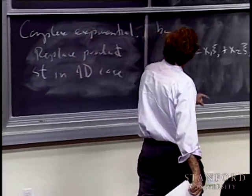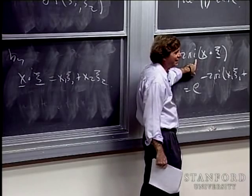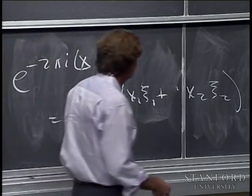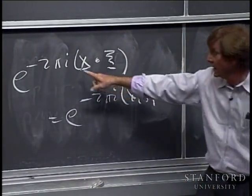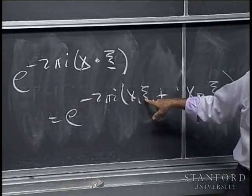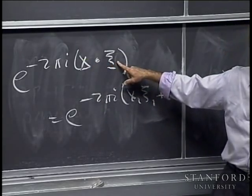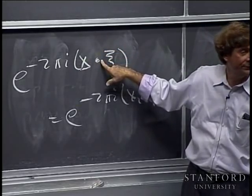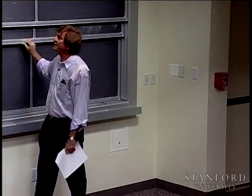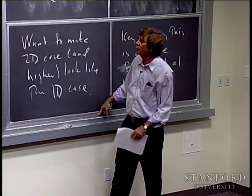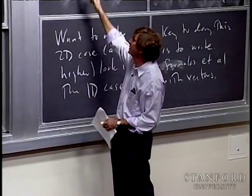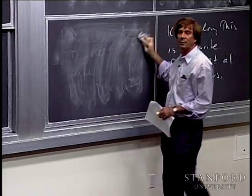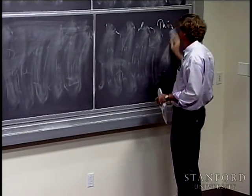Written in vector notation with the inner product, this looks as much like the one-dimensional case as possible. Note that x·ξ is a scalar, so I'm taking e to the minus 2πi times a scalar — nothing new there. I've only replaced multiplication of the one-dimensional variables s and t by the inner product of the two-dimensional variables x and ξ. The definition of the Fourier transform is: F-hat of f at vector ξ equals the integral over R² of e^(−2πi x·ξ) f(x) dx.